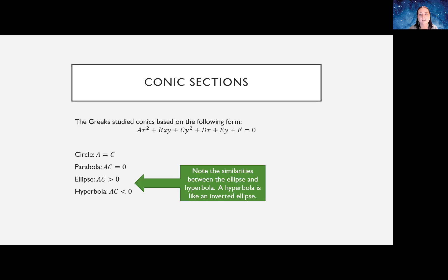I want you to focus on the similarities between the ellipse and the hyperbola, because they are very, very similar. One has a times c greater than zero, the other has it less than zero. This oppositeness shows up a lot when comparing ellipses to hyperbolas — a hyperbola is basically like taking an ellipse and inverting it, turning it inside out so to speak.